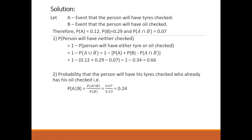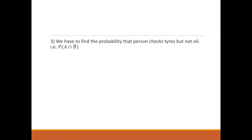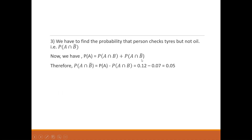For the last one, we have to find the probability that the person checks tires but not oil. We have to write P(A and not B). The formula is: P(A) equals P(A and B) plus P(A and not B). This is a very important formula you should remember — especially when writing for P(A). Here we have B and not B, so B and B complement together cover everything, and we can reshuffle and write the formula accordingly.